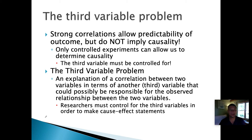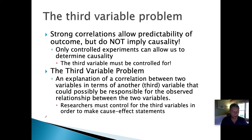Any researcher doing a correlation study must control for third variables in order to make a cause-and-effect statement. For example, there's a positive correlation between a student's SAT scores and the number of television sets that his family owns. Do you really think that the number of television sets in a house determines what your SAT score is? And yet that was a strong correlation.